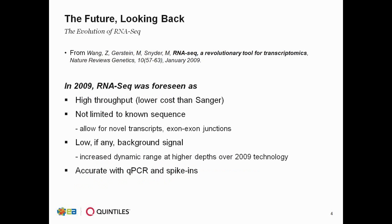Looking at the future from several years ago, I want to examine a paper by Wang that appeared in Nature Reviews Genetics in January 2009, which talked about RNA-Seq as being potentially a revolutionary tool for examining transcriptomics. In 2009, RNA-Seq was foreseen as being high throughput and therefore much lower cost than Sanger, not limited to known sequence, and allowing us to examine novel transcripts or exon-exon junctions, or even new or novel organisms, with low if any background signal, and to be accurate with quantitative PCR and other spike-ins. Since that time, I think we have seen that this is true for the most part. Certainly RNA-Seq has become high throughput, and we know its capabilities for looking at novelty.